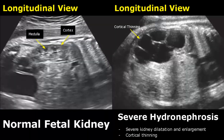In severe hydronephrosis, you can see cortical thinning — a very thin layer of cortex — along with a large degree of dilatation, and the kidney is also enlarged.